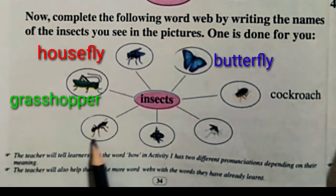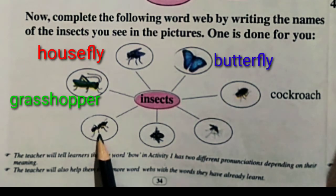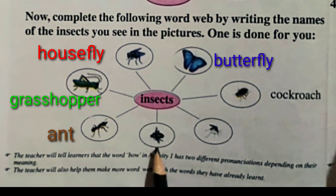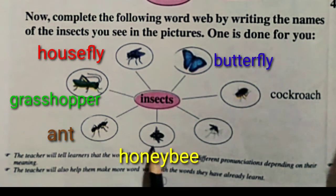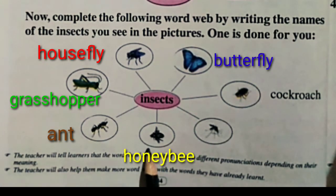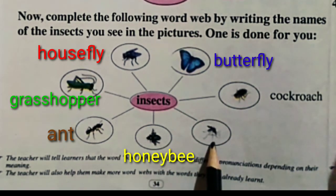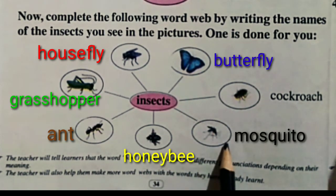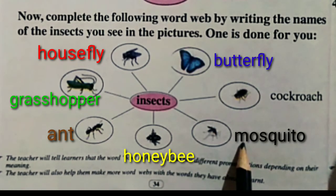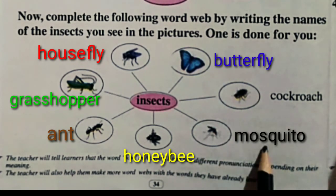Ant, ant. Honey, honeybee. Mosquito — M-O-S-Q-U-I-T-O, mosquito.